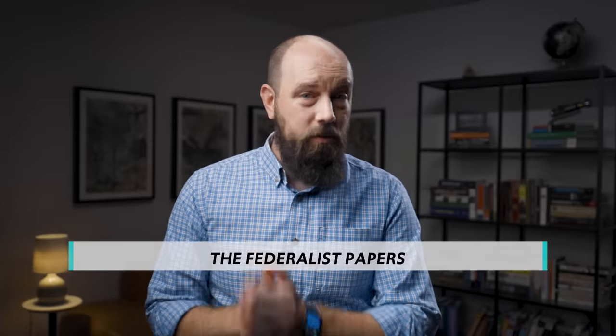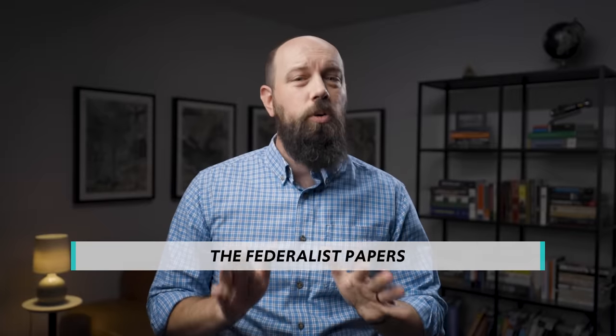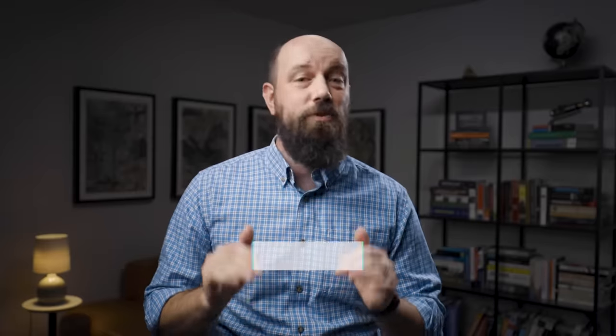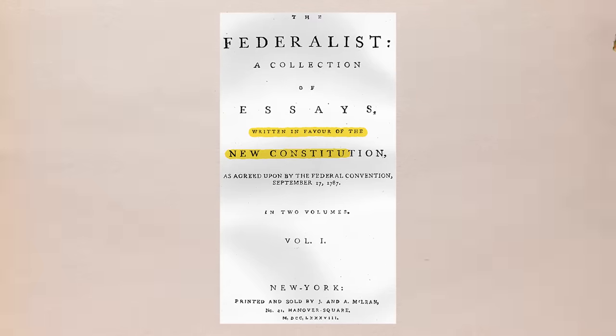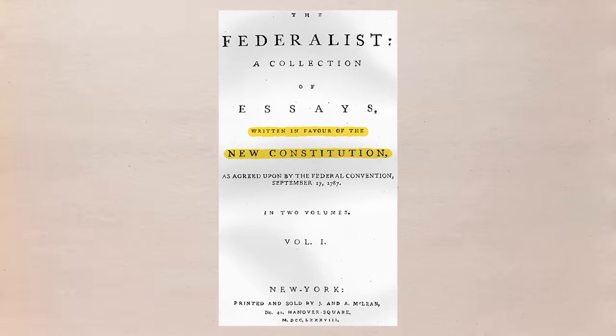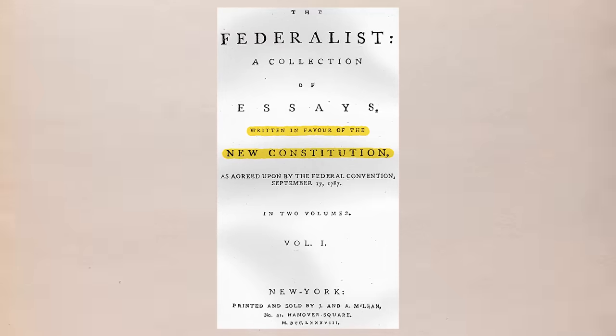Since this is our first document from the Federalist Papers, let me give you a quick introduction to what this series of essays was. During the ratification debates over the new constitution, John Jay, Alexander Hamilton, and James Madison, who represented the Federalists who were very much in favor of the new constitution, published essays in a New York newspaper in order to convince the public to ratify. In doing so, they addressed the most common objections to this new form of government and gave a sense of how the nation would work under this new constitution.